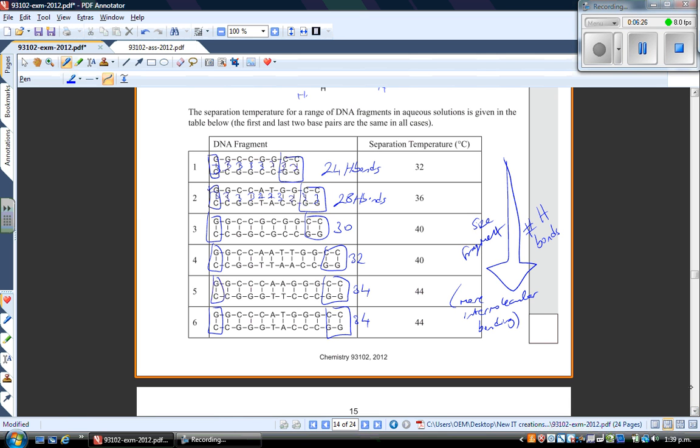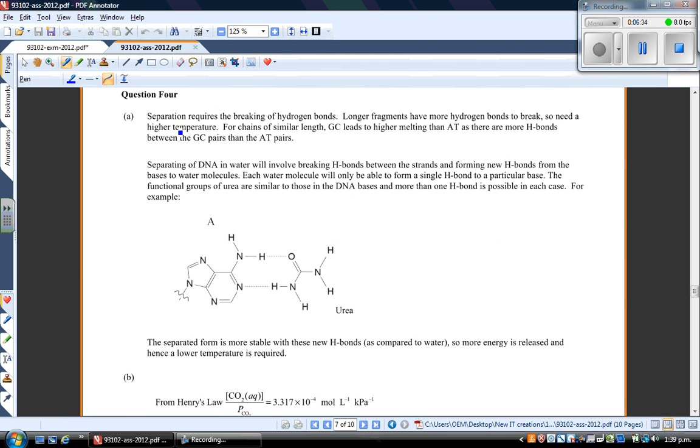So the other two main things we need to talk about there. We can go to the sample answer from NZQA just to see what they say. So separation requires the breaking of hydrogen bonds. Yes, we accounted for that. Longer fragments have more hydrogen bonds to break, so need a higher temperature. And for chains of similar length, GC leads to a higher melting point than AT because there are more H bonds between the GC pairs than the AT pairs. So that's the first part down there.